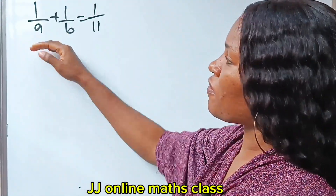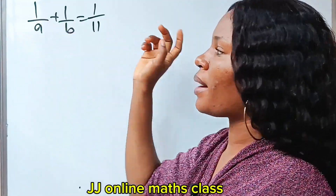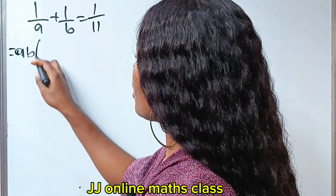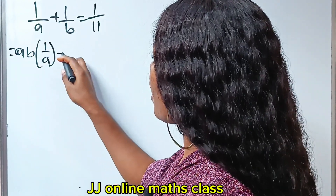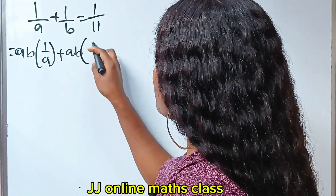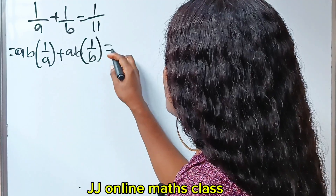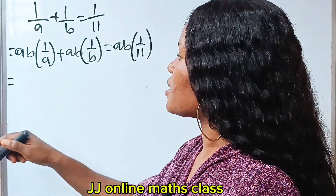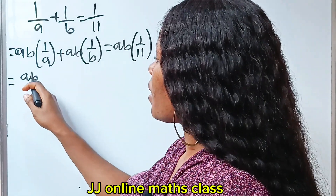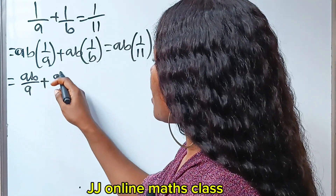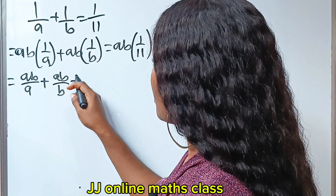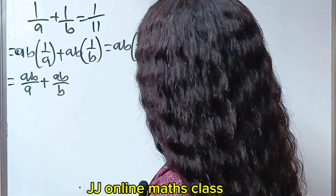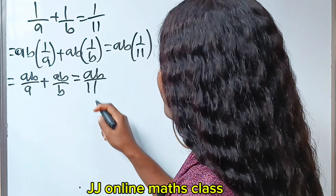Okay, let's simplify this by multiplying each term by AB. So we are going to have AB multiplied by 1 over A, plus AB multiplied by 1 over B, is equal to AB multiplied by 1 over 11.